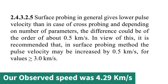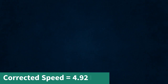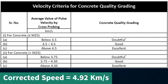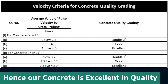The code recommends that for the indirect test, the pulse velocity may be increased by 0.5 if the calculated velocity is greater than 3 km per second. Here the calculated velocity is 4.42 km per second, thus the corrected velocity is 4.92 km per second. From the standard table provided in the IS code, the quality of concrete is excellent.